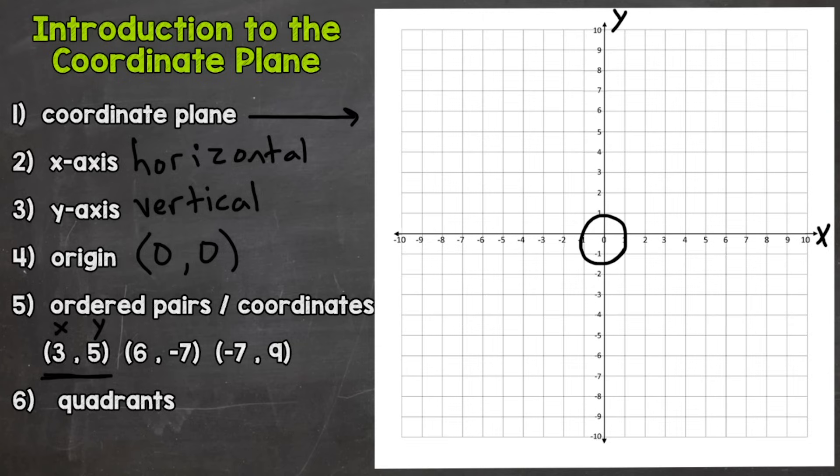Let's plot (3, 5). We start at the origin in the center of our coordinate plane and go over 3 on the x-axis—that's a positive 3. We go over 3 and then up to positive 5. Where those intersect, we plot a point, and I'm going to label that point.